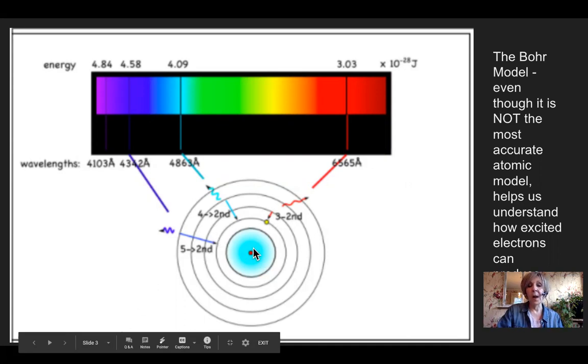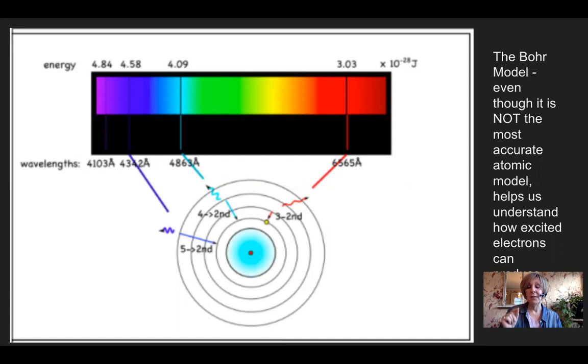And so the Bohr model here is showing us that electrons are in certain energy levels and that part we know is true even today. But when you get those electrons that are excited, when you excite them, they jump up to a higher energy level.